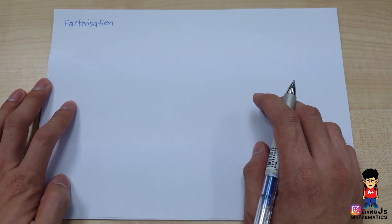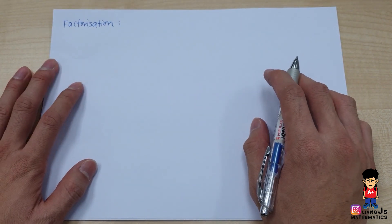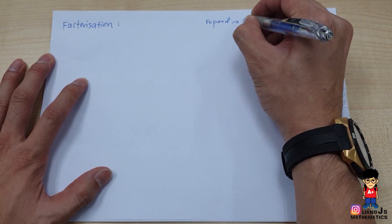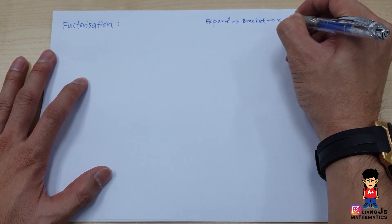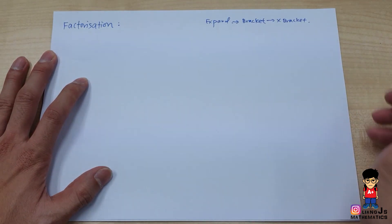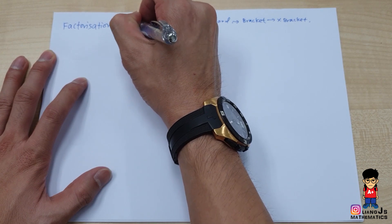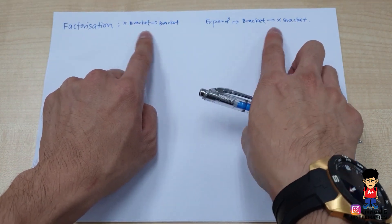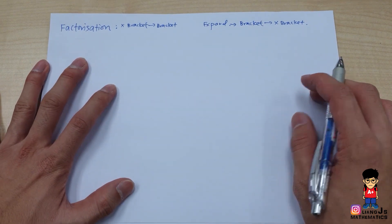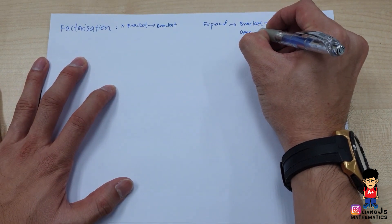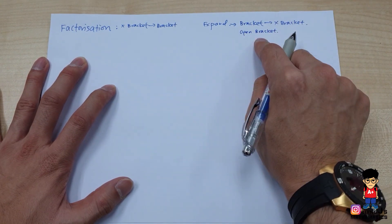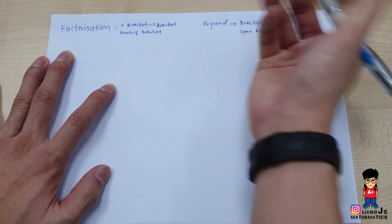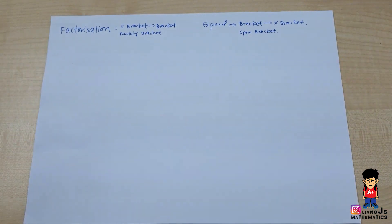Before I start, we have to know these very important things. Let's put a small word here: 'expand,' from the previous videos. Expand basically means going from a bracket to without a bracket — open bracket. So factorization, since it's the reverse, means going from no bracket to having a bracket. So expand means open bracket; factorization means make the bracket. They are opposites.